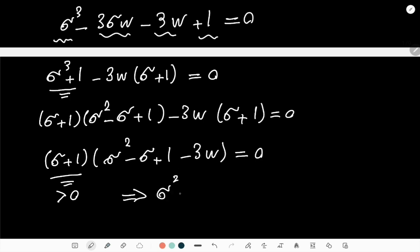So the only way that this is zero is when the second term is zero. It means σ² - σ + 1 - 3w = 0. Now we have come all this way and now probably you're wondering how can this help me find x and y. I will tell you how it can.